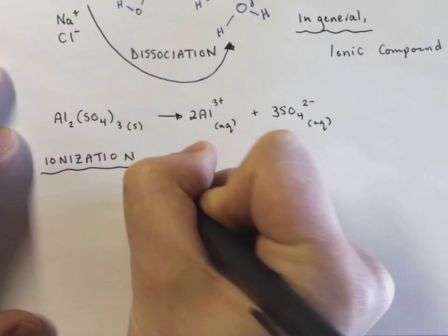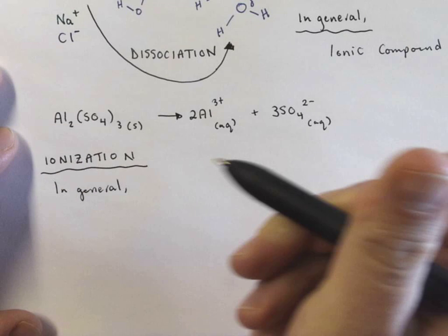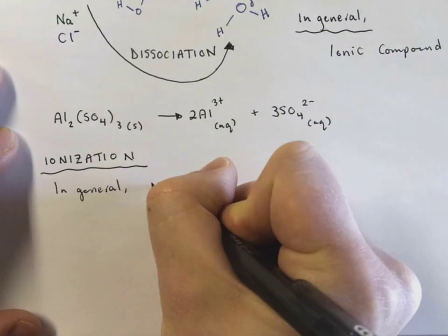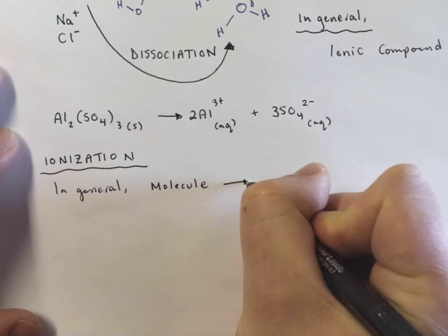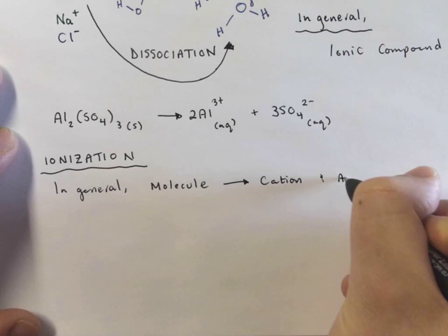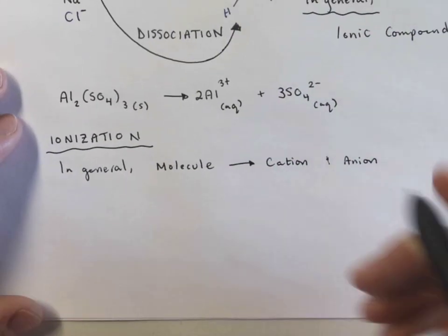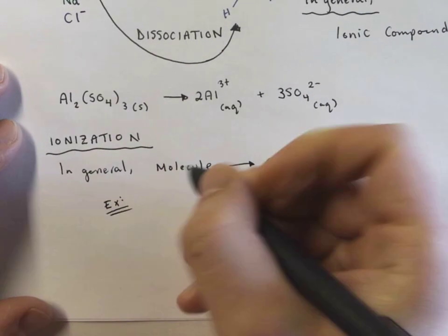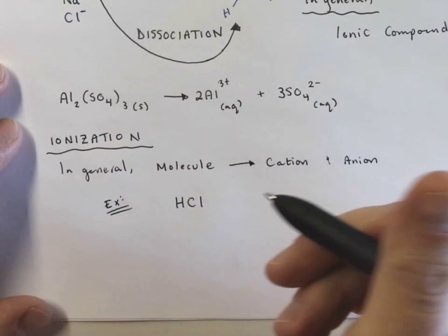With ionization, it looks a little bit different because what's going on here in general is that we're going from a molecule that has a neutral charge into a cation and an anion. So the clearest example of this is if we take something like hydrogen chloride.